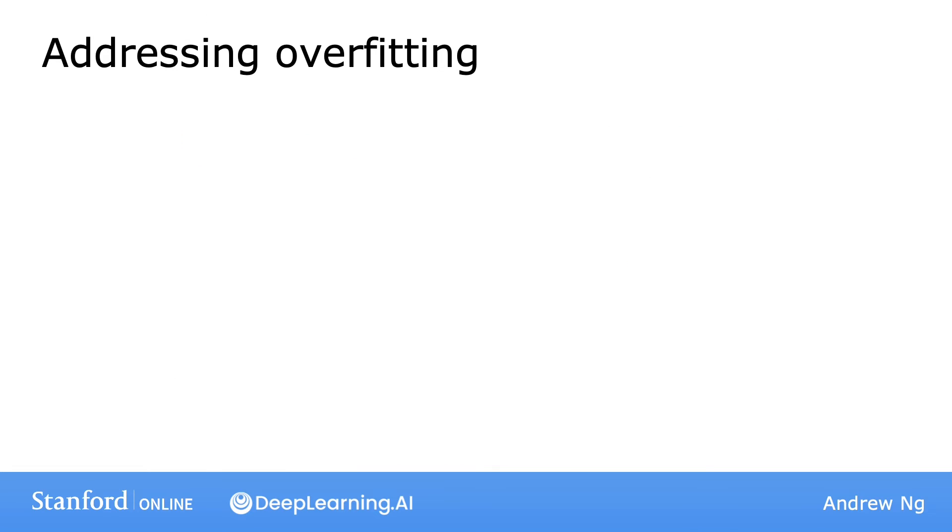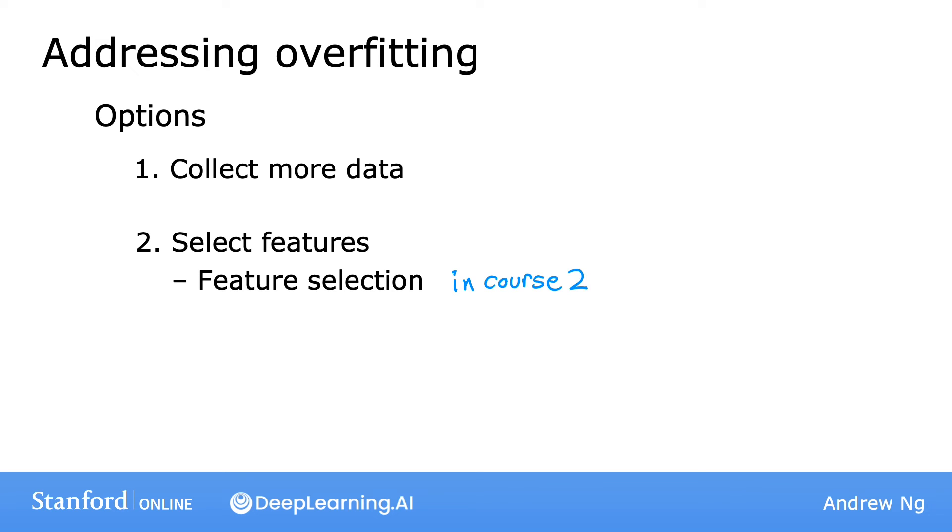So to recap, these are the three ways you saw in this video for addressing overfitting. One, collect more data. If you can get more data, this can really help reduce overfitting. Sometimes that's not possible. In which case, some other options are to try selecting and using only a subset of the features. You'll learn more about feature selection in course two. Three would be to reduce the size of the parameters using regularization. This will be the subject of the next video as well.